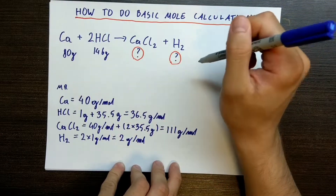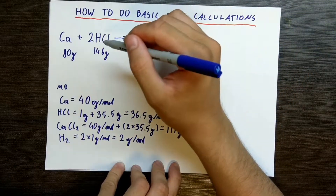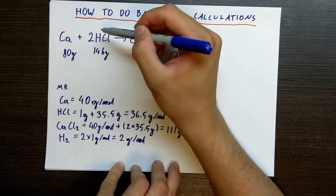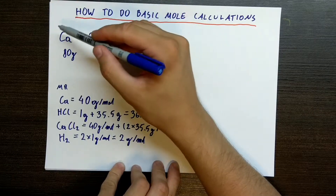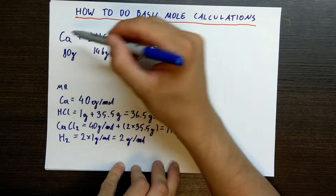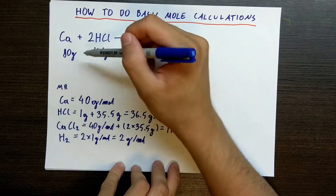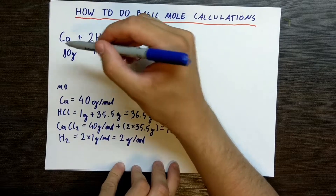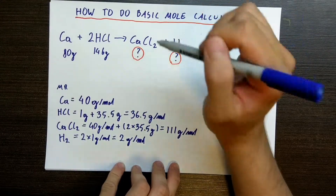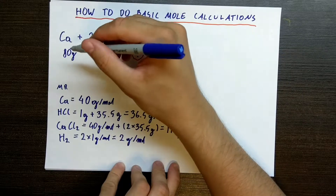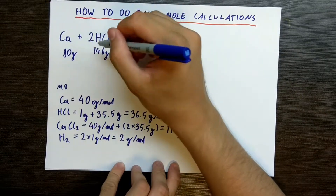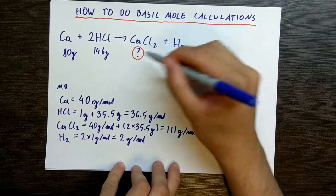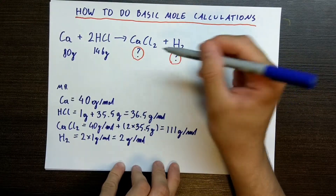The ratios of moles will be there — this can be 2 moles and 4 moles, or 3 moles and 6 moles. They may not always appear exactly as written in the equation. This is why we need to figure out how many moles we have of each reactant, in order to figure out how many moles of products we will get.